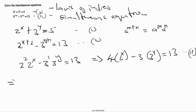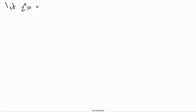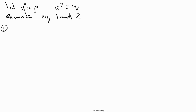Now, in order to solve our simultaneous equation, let 2^x = p and 3^y = q. This allows us to solve the simultaneous equation in a simpler way without having to deal with the indices. Once we make that substitution, equation 1 — which is 2^x + 3^y = 5 — can be rewritten as p + q = 5.